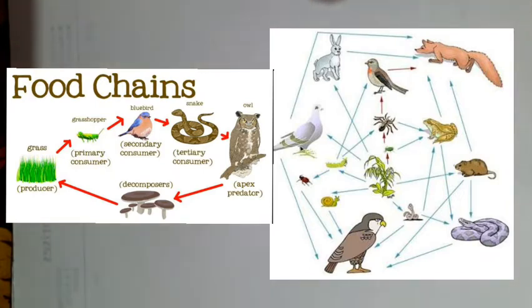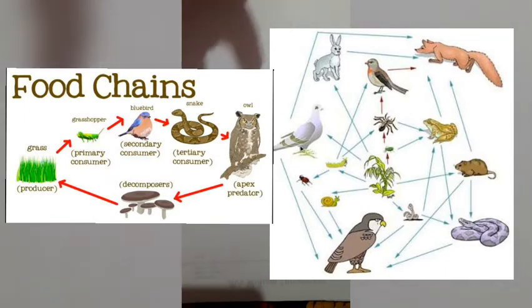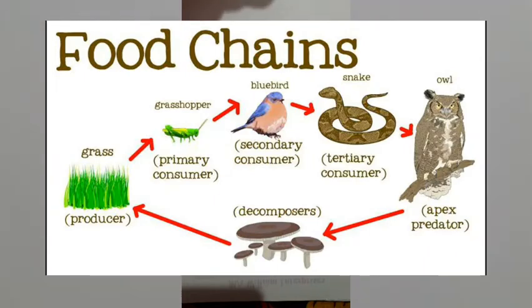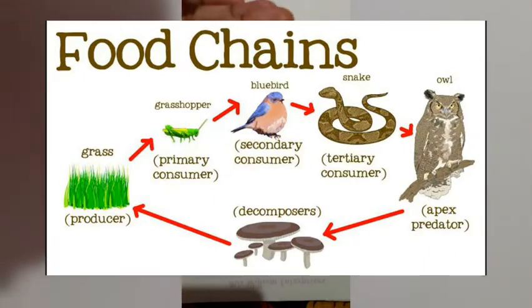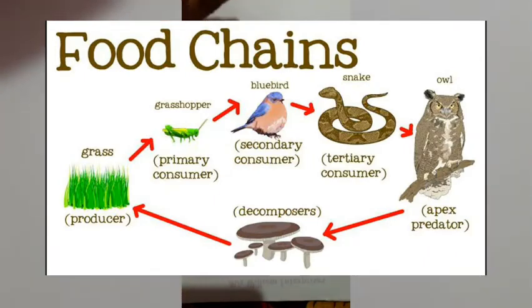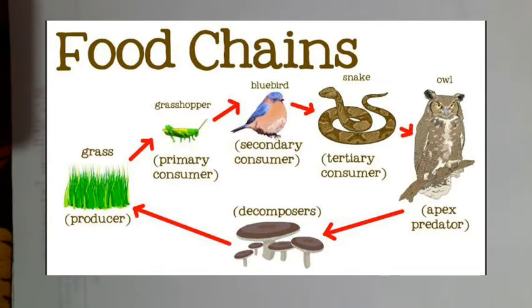What exactly happens? Producers are eaten by the primary consumers like goat, rabbit, etc. These primary consumers are again eaten by the secondary consumers. Secondary consumers are then eaten by the tertiary consumers.